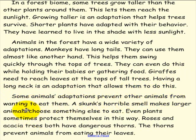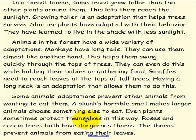Some animals' adaptations prevent other animals from wanting to eat them. A skunk's horrible smell makes larger animals choose something else to eat. Even plants sometimes protect themselves in this way — roses and acacia trees both have dangerous thorns that prevent animals from eating their leaves.